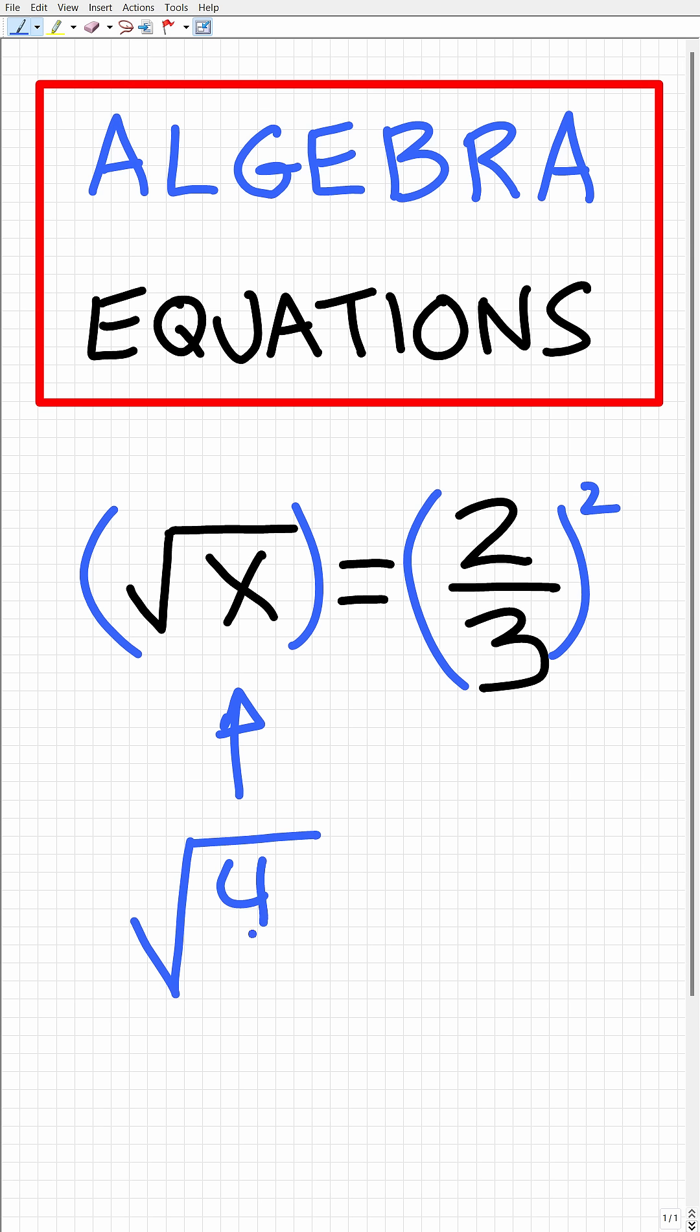So is the square root of four ninths equal to two thirds? If it is, then four ninths is the correct answer.